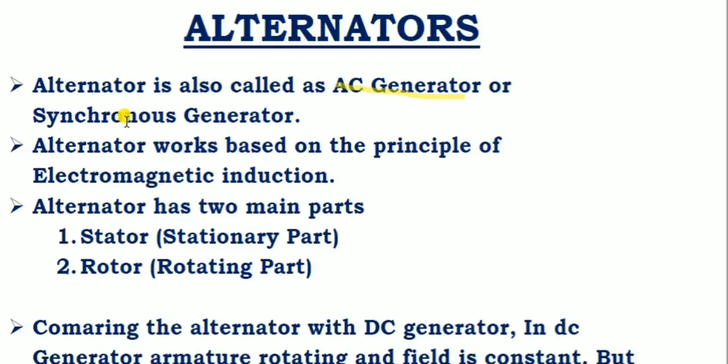An alternator is also a synchronous generator. The reason it is called a synchronous generator is that the alternator rotates at synchronous speed. The speed of the alternator is at synchronous speed, represented as NS, approximately 1500 RPM. That is why this is also called a synchronous generator.